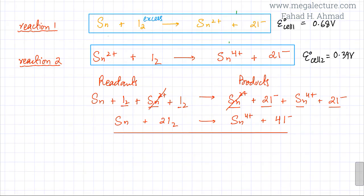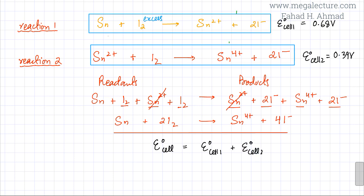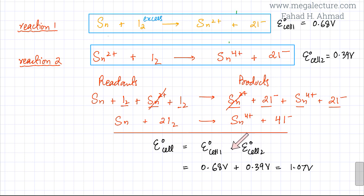We also calculated E°cell values for the two separate reactions: the first had E°cell = 0.68V and the second had E°cell = 0.39V. For the overall combined reaction, the E°cell is the sum of the two individual E°cell values: 0.68 + 0.39 = 1.07 volts. So the overall E°cell for Sn + 2I₂ → Sn⁴⁺ + 4I⁻ is 1.07 volts.